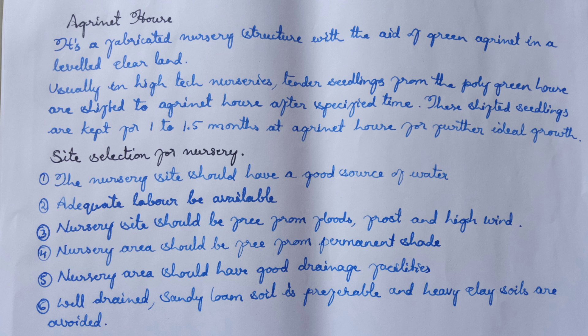Site selection for nursery: the following factors are considered. The nursery site should have a good source of water. Adequate labor should be available. The site should be free from floods, frost, and high wind. The nursery area should be free from permanent shade and should have good drainage facilities. Well-drained sandy loam soil is preferable, and heavy clay soils are avoided.